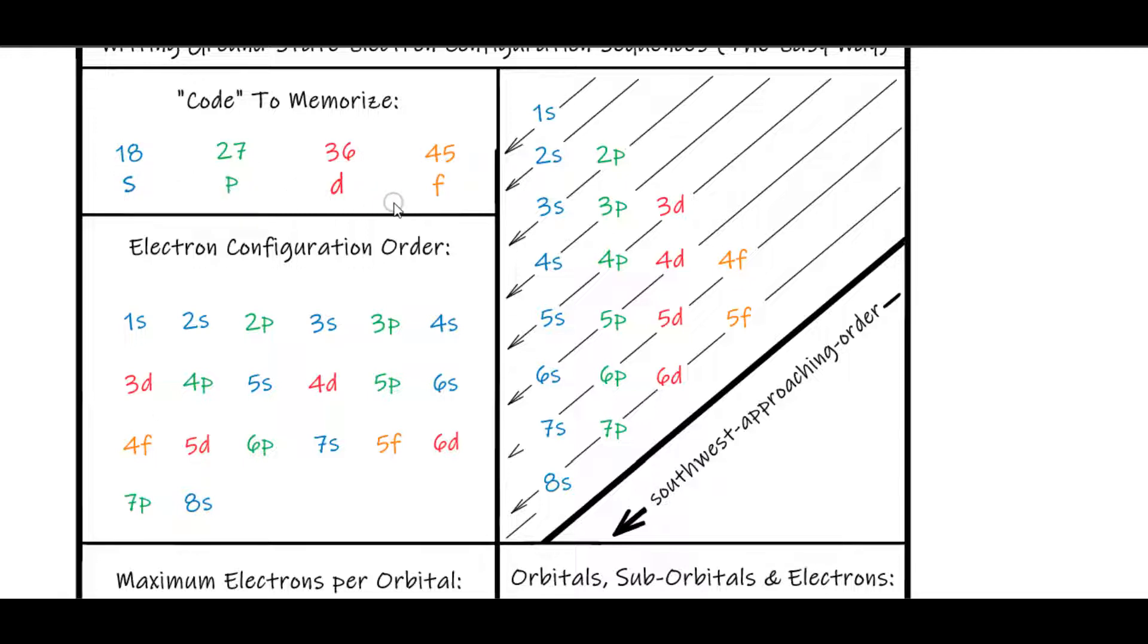S, P, D, F. And then you geometrically write the orbital count in this manner. And then you approach the order going southwest. So 1S, 2S, 2P, 3S, 3P, 4S,